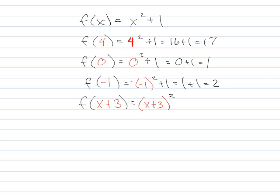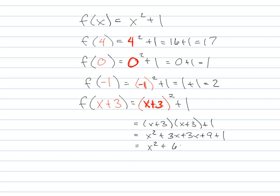Here, everywhere I saw an x, I put a 4. Here, everywhere I saw an x, I put a 0. Everywhere I saw an x, I put a negative 1. Everywhere I see an x, I'm going to put an x plus 3. And the rest of the function follows. And then all I do is I simplify from there. First, outer, inner, last, plus 1. And you're golden.